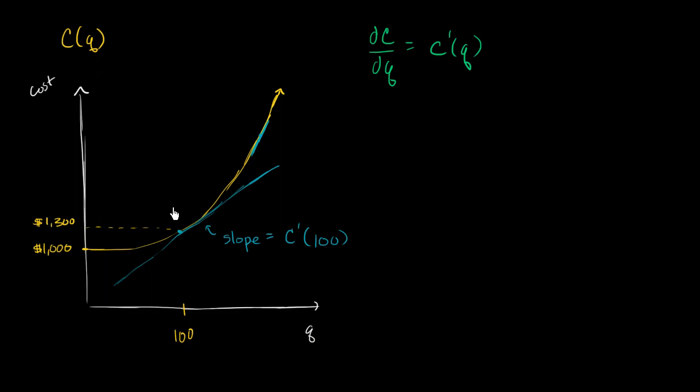And it might make sense. Maybe I'm using some raw material out there in the world, and as I use more and more of it, it becomes more and more scarce. And so the market price of it goes up and up. But why do I even care about the rate at which my costs are increasing, the rate at which my costs are increasing on the margin, which is why this is called marginal cost?